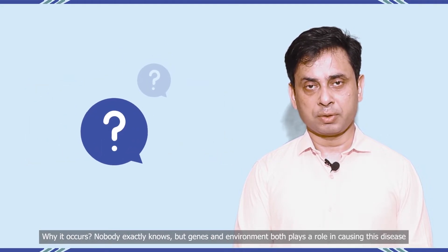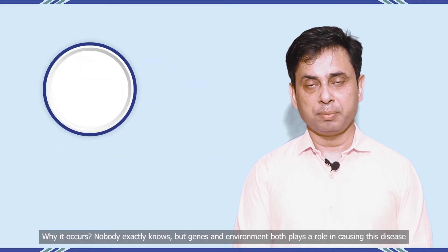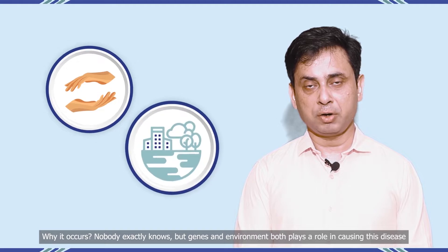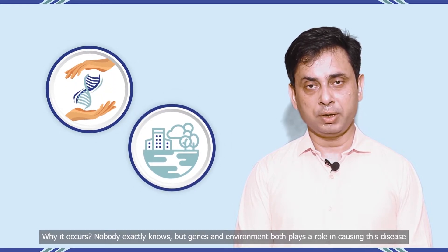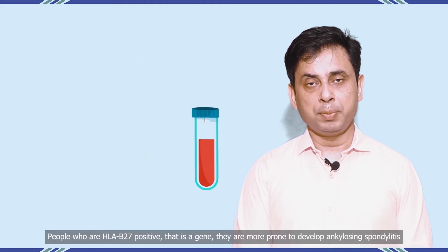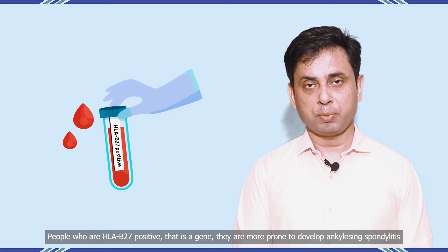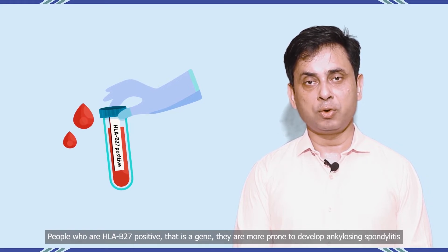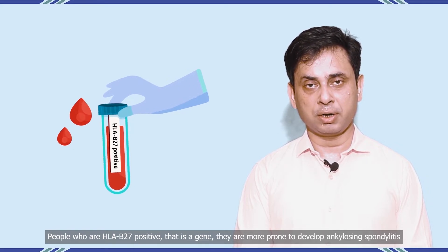Why does it occur? Nobody exactly knows, but genes and environment both play a role in causing this disease. People who are HLA-B27 positive — that is a gene — they are more prone to develop Ankylosing Spondylitis.